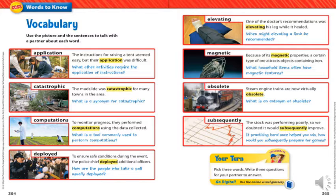Of course you all know what a magnet is. Because of its magnetic properties, a certain type of material attracts objects containing iron — that is what we mean by 'magnetic.' Steam engine trains are now virtually obsolete, meaning they are no longer found or used nowadays. 'Subsequently' means step by step, occurring or following in time or order.